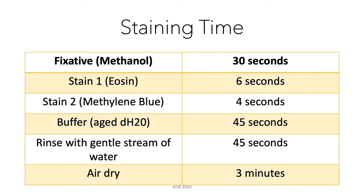Here is a common staining procedure. However, you should note that different labs may use different timings depending on their optimized protocol and manufacturer's instructions. For this procedure, we have fixative for 30 seconds, eosin for 6 seconds, methylene blue for 4 seconds, then buffer for 45 seconds, then rinse your slide with a gentle stream of water for 45 seconds, and finally air dry your slide for 3 minutes.